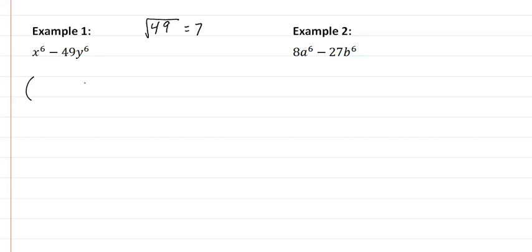So difference of squares says we have two boxes, we put plus in one, minus in the other. The square root of x to the sixth, if you remember back up in our notes, is x cubed. The square root of 49 is 7, and the square root of y to the sixth would be y cubed.